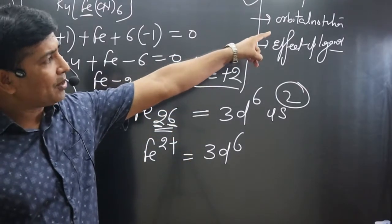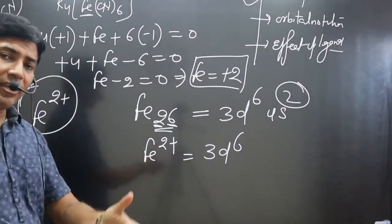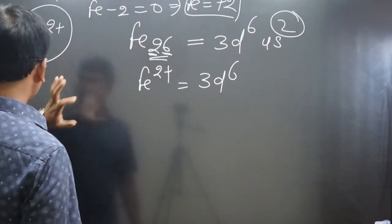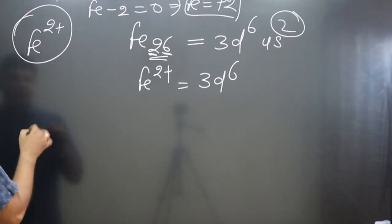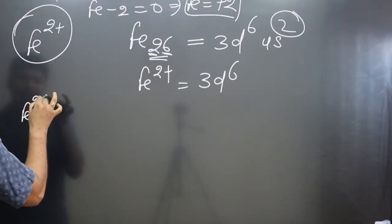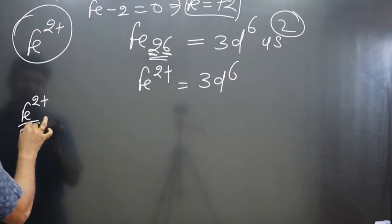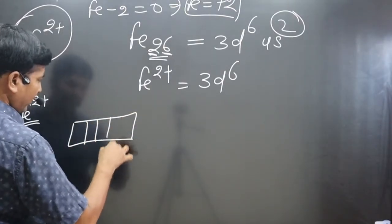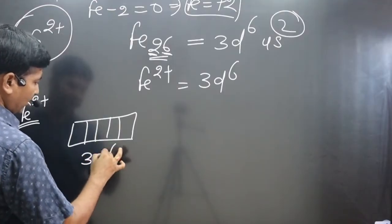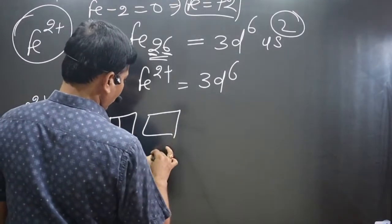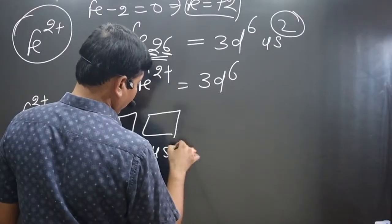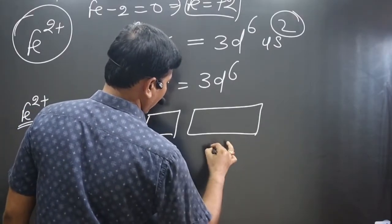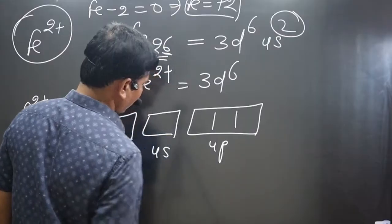Next, we write the orbital notation. For Fe2+, the d orbital has 5 boxes and is 3d6. Then we have 4s, which has 0 electrons (4s0). Then we have the 4p orbital, which has 3 boxes.